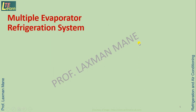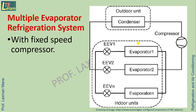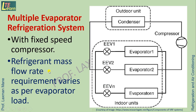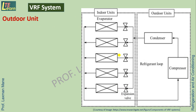In a multiple indoor-unit refrigeration system with fixed speed compressors, the refrigerant mass flow rate requirement varies as per indoor unit load. In the case of increasing indoor unit load, there is increasing suction pressure of the single compressor, which may not fulfill the requirements of other indoor units as far as temperature requirements are concerned. So, VRF system is used.